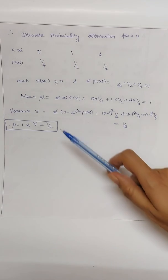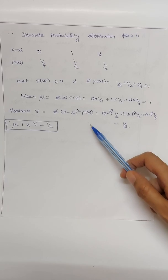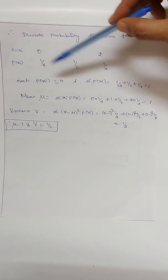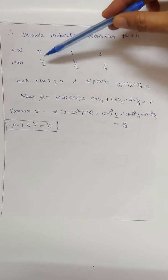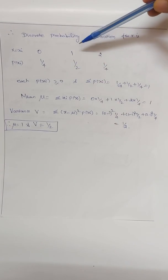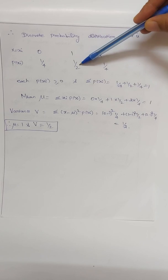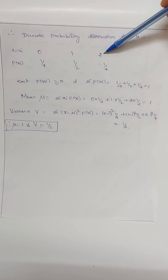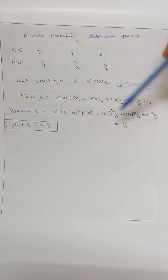The variance formula is: Σ (x − μ)² · P(x_i). Applying it: (0−1)²·(1/4) + (1−1)²·(1/2) + (2−1)²·(1/4) — that gives the variance.